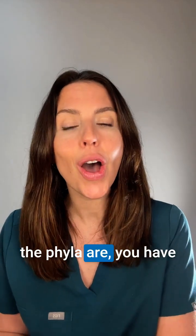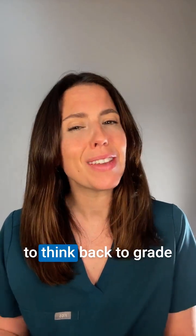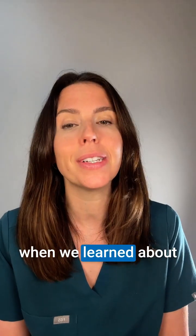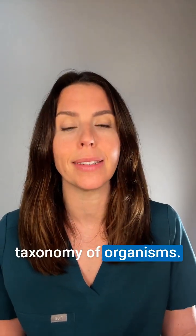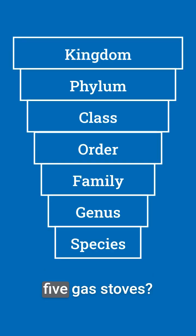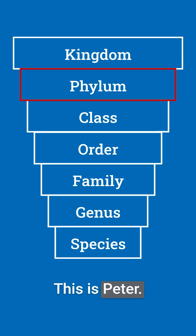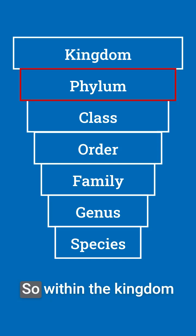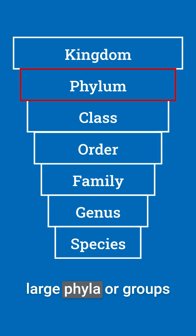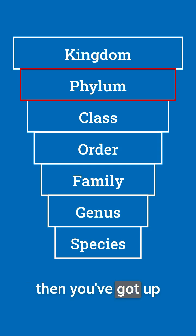Now, to understand what the phyla are, you have to think back to grade 10, grade 11 biology, when we learned about taxonomy of organisms. Remember King Peter cooks on five gas stoves? So within the kingdom of eubacteria, you've got a number of large phyla, or groups of bacteria, and then you've got up to 50 tiny phyla.